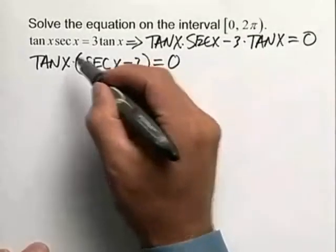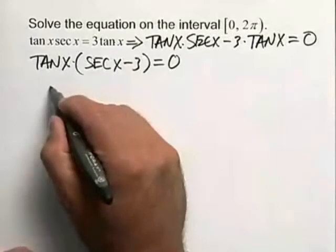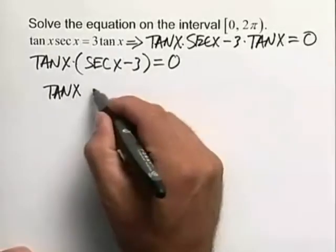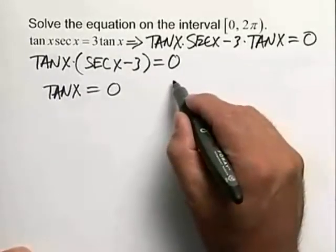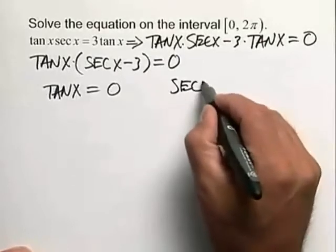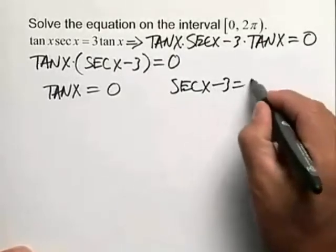Now that we have our multiplication equal to 0 we can set the tangent equal to 0, so tangent x equals 0, and also set the secant of x minus 3 equal to 0.